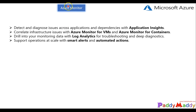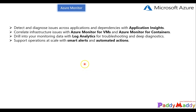Azure monitoring supports operations at scale with smart alerts and automated actions. For example, if a VM is utilizing 90% CPU, you get an alert. When you get that smart alert, you can integrate it to trigger a workbook to perform automated tasks — such as scaling up the VM to a higher CPU configuration. At the same time, you can trigger your ITSM so that a ticket gets created and automatically assigned to a specific team. All of this can be fully automated and is fully integrated with Azure monitoring.